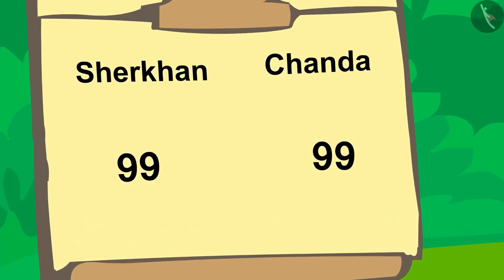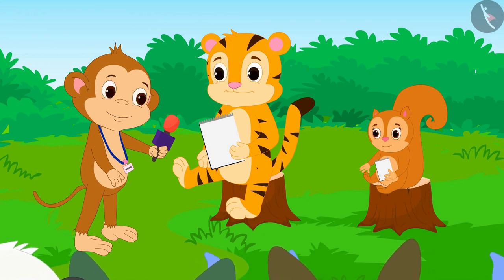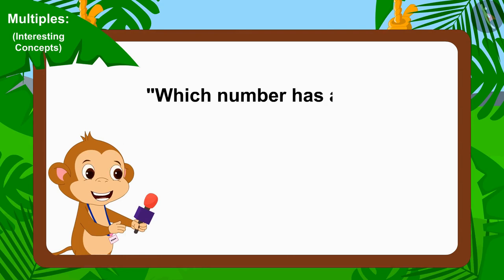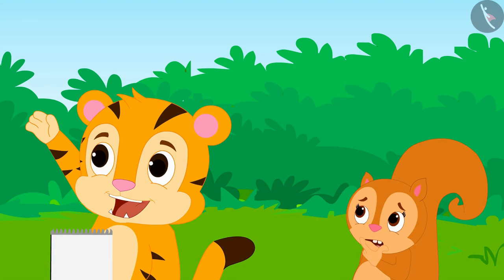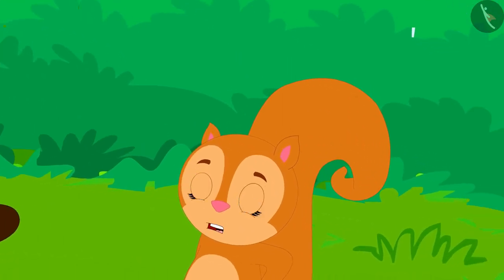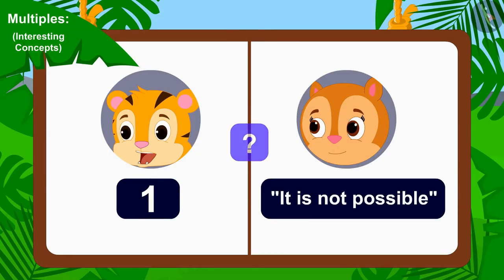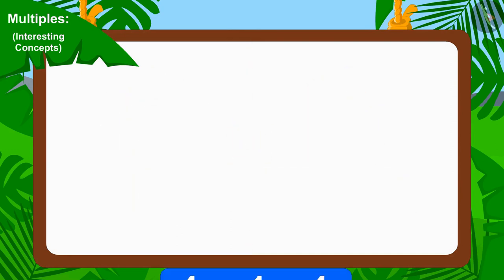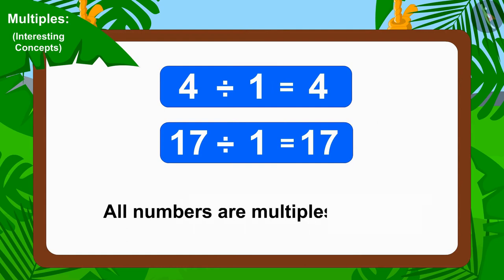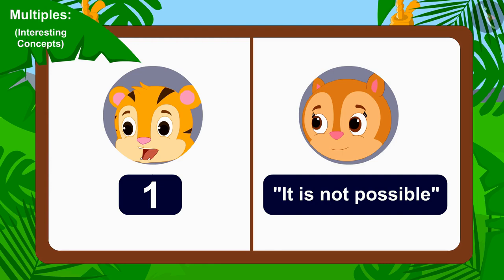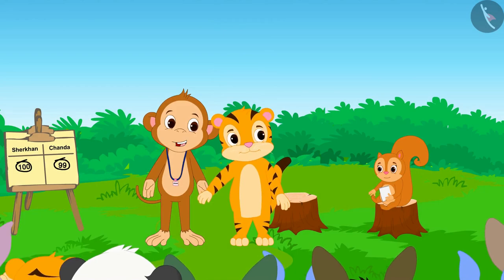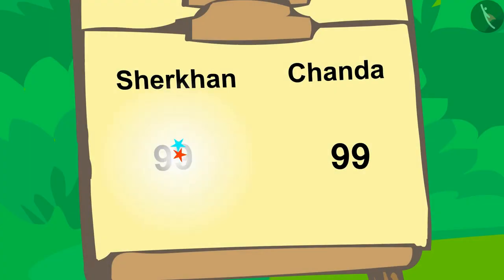Once again the scores are equal. Now let us see what the last question of the competition is. The next question is: which number has all other numbers as its multiples? Sheer Khan immediately replied one, and Chanda replied it is not possible — there is no such number. Children, can you tell whose answer is correct? We can divide any number by one, therefore all numbers are multiples of one. With this, Sheer Khan's answer is absolutely correct. Sheer Khan won the competition by going one point ahead of Chanda.